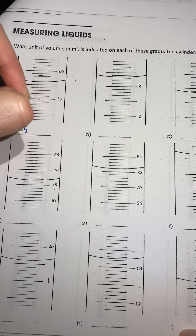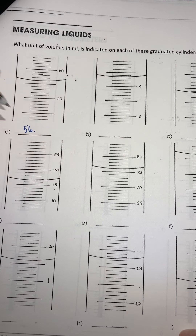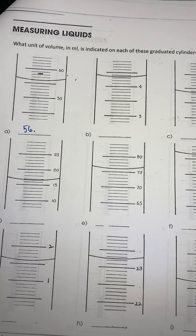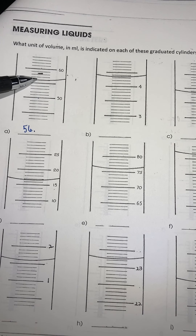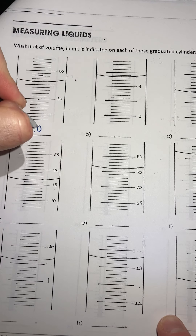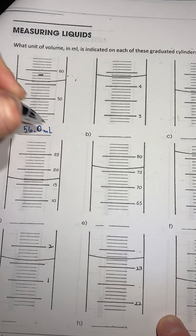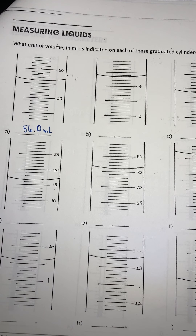So 56 is what you're going to put in your tens place and your ones place. The next digit is going to be estimated — where does it look like that line is? It looks like it's right on it, so I would estimate that last digit to be a zero. Your unit there is milliliters — so 56.0 milliliters.